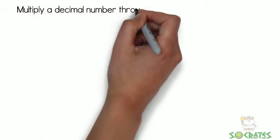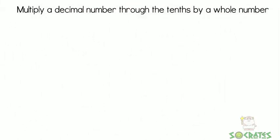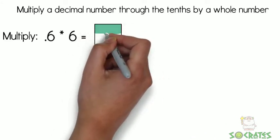Multiply a decimal number through the tenths by a whole number. Multiply: 0.6 times 6 equals how many?